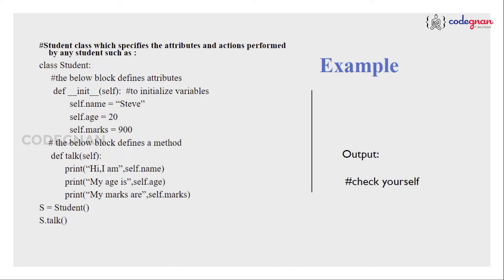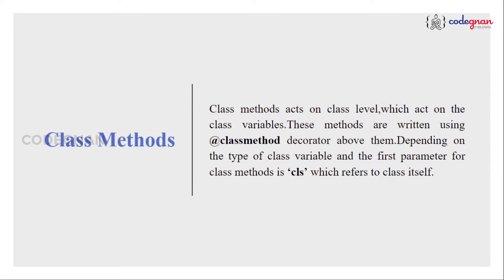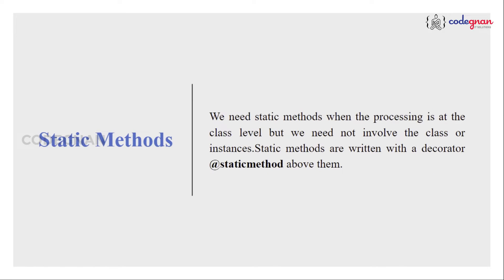We have worked on a couple of examples. For class methods, we see they act on the class level, where we must use the @classmethod decorator and use the first parameter as cls, which refers to the class. Similarly, we worked on static methods, because these methods are used when the processing required is at the class level but we need not involve any class instances. We use the @staticmethod decorator.